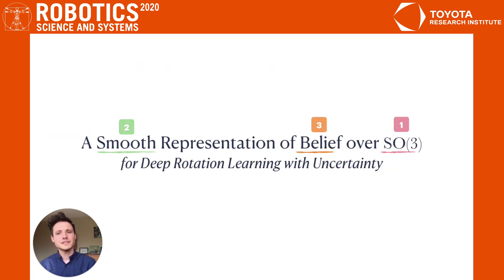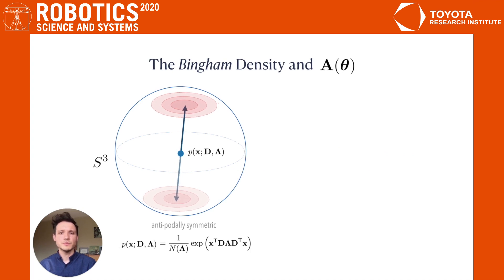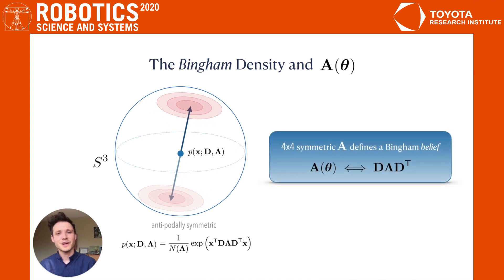Next, in what sense is our representation a belief? Well, consider the Bingham distribution, which can be used to define antipodally symmetric probability densities on the unit sphere in any dimension. Serendipitously, our symmetric matrix A defines a Bingham distribution over the three-dimensional unit quaternion sphere. This allows us to interpret our representation as encoding a belief over SO3.